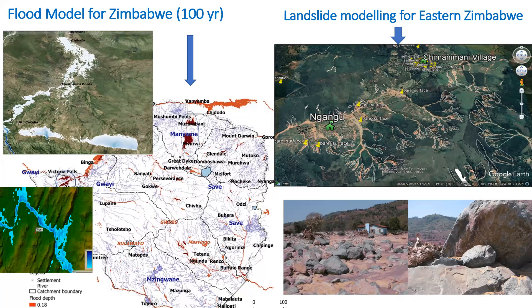I have a few slides showing outputs of disaster management obtained from hydrological models, geographic information systems, and remote sensing, with data training done using artificial intelligence. For example, we have this map of Zimbabwe showing the red areas of high flood depth — areas that are particularly prone to flooding. You can also see flooded areas and sediment displaced in the Chimanimani area, including boulders the size of a car, as well as areas that experienced landslides.